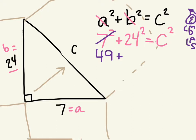24 squared in my calculator gives me 576, and I still have nothing on C, so I'm going to keep that equal C squared.